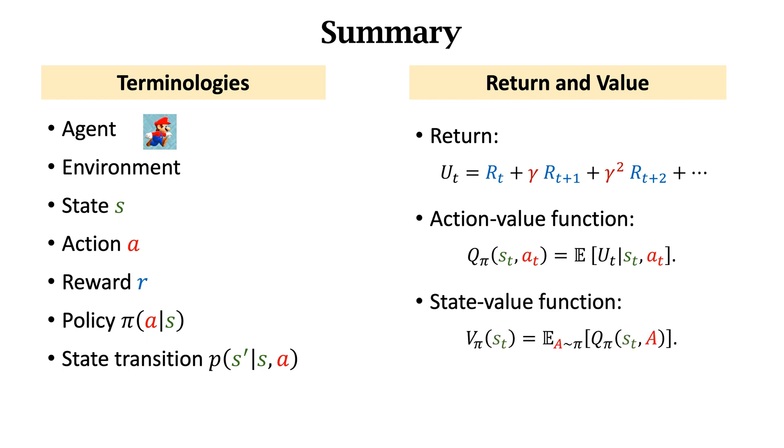The state value function v_π eliminates the action a by taking the expectation of q_π with respect to a. v_π evaluates how good the current state is.